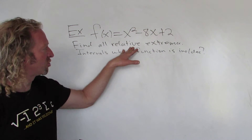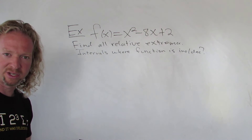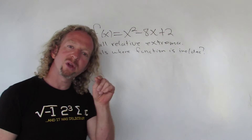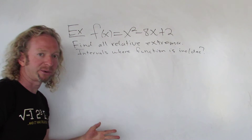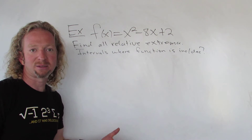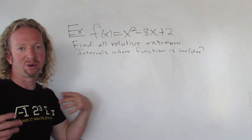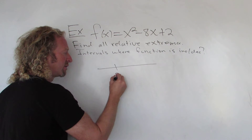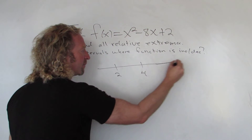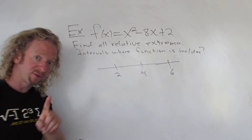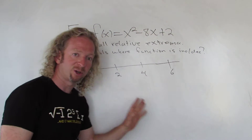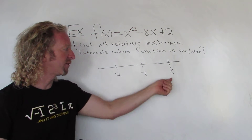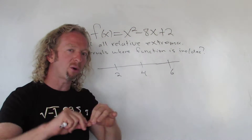To find the extrema we're going to use the first derivative test. The first derivative test basically says: if your first derivative changes sign at a critical number, you're going to have a relative maximum or a relative minimum. Critical numbers are numbers in the domain of the function where the derivative is zero or undefined — not vertical asymptotes.